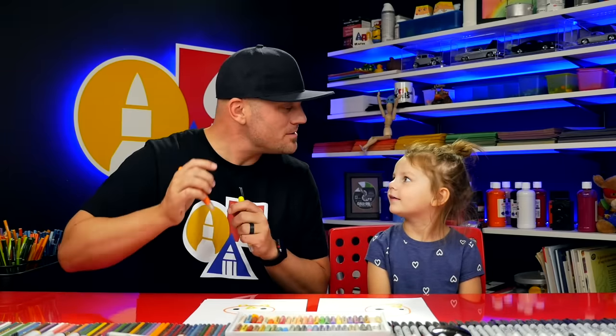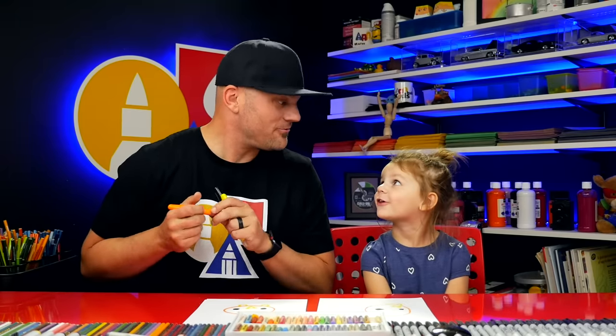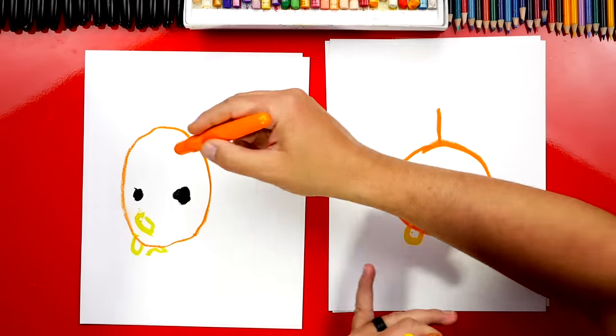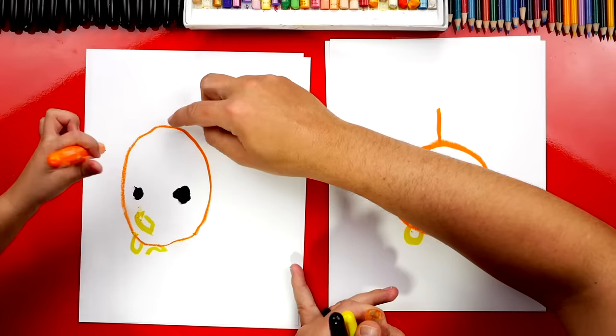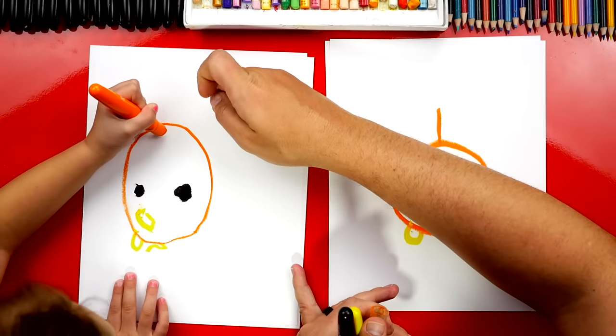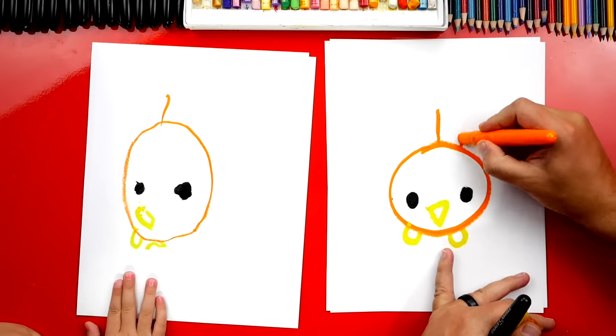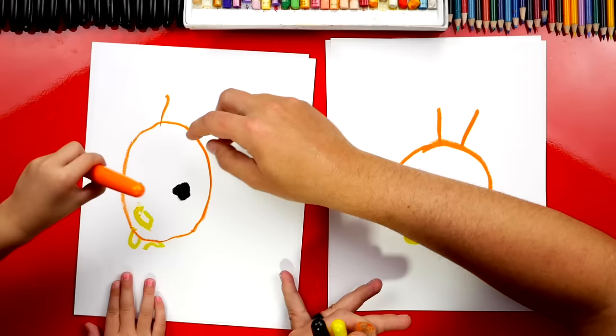Olivia, what is our turkey missing? Feathers. Yeah. We're going to draw lots of feathers. Let's draw one feather sticking out of the top. Draw one line coming up. Right here. Yeah. Then we're going to draw another one right next to it. Draw another one.